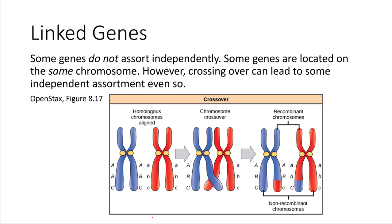Just to wrap up our consideration of more complex inheritance patterns: some genes do not assort independently and don't follow Mendel's rule. That's because multiple genes can be encoded on the same physical chromosome. In that case, those genes are said to be linked — they're physically present on the same chromosome and tend to be inherited together. For example, genes A, B, and C on this chromosome shown in blue are all linked and tend to be inherited together.